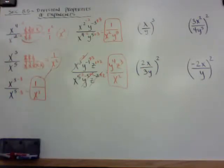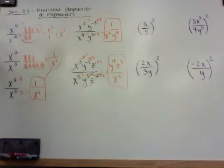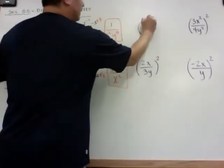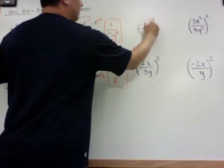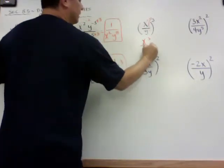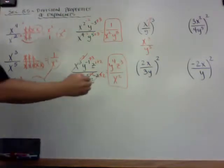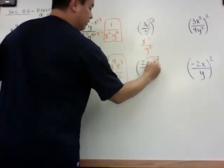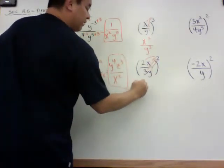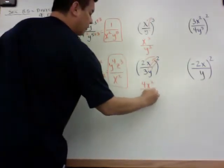The next part we're going to learn: if I have a fraction in parentheses and it has a power on the outside, all you do is distribute the exponent to whatever is inside. There's an invisible 1. When I get power to a power, it just becomes x to the 3rd over y to the 3rd. On this one, when I distribute the 2 into all four of them, I get 2 squared which is 4, x squared, over 3 squared which is 9, y squared.